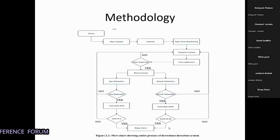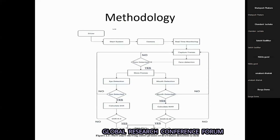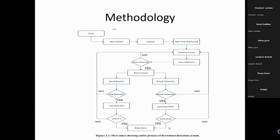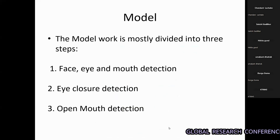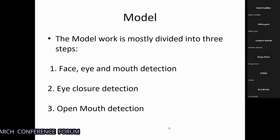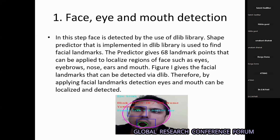The same can be said for the mouth detection. We will detect the mouth and calculate the MAR, that is the Mouth Aspect Ratio. If the mouth aspect ratio is greater than 0.38, then we also raise the alarm. This model is divided into three parts: face, eye, and mouth detection; eye closure detection; and mouth open mode detection.